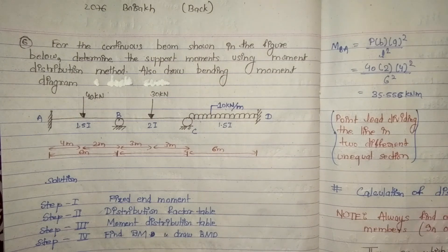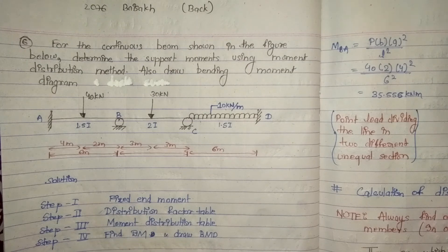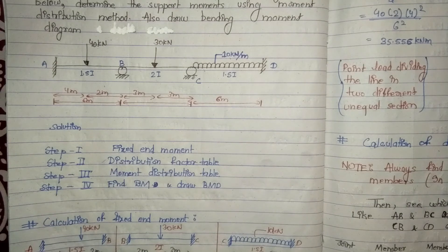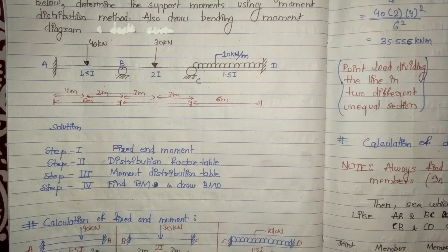Hello. This question is from 2076 Baisakh. Here we are asked to find support moments by the Moment Distribution Method, and lastly to draw the bending moment diagram. For the calculation there are 4 steps: fixed end moment, then distribution factor table, then moment distribution table, and lastly find bending moment and draw bending moment diagram.